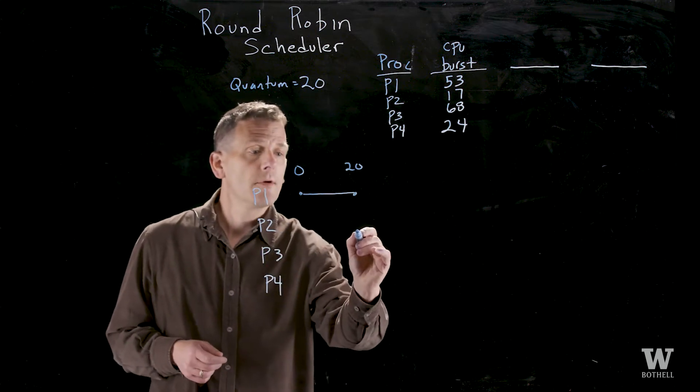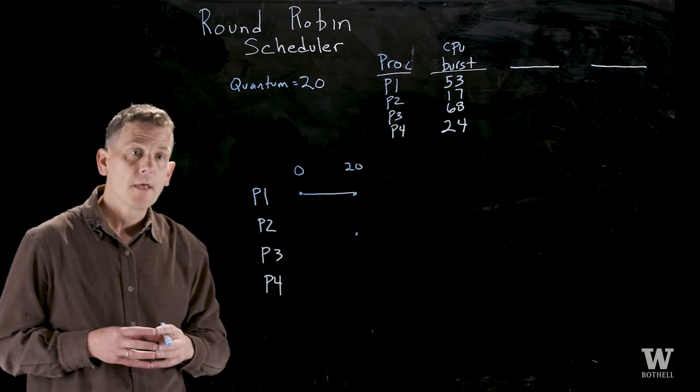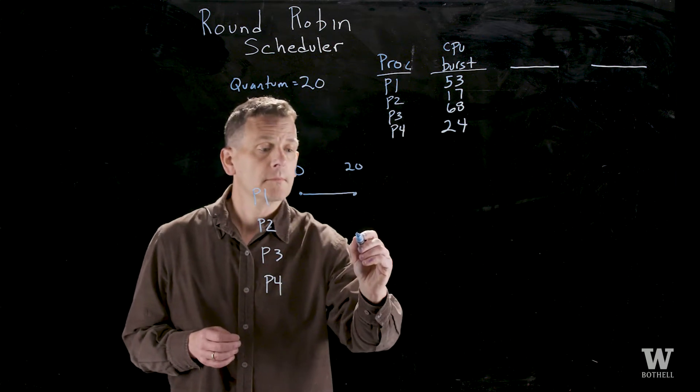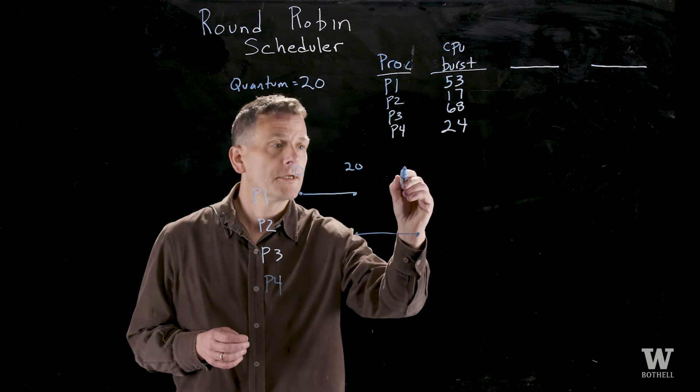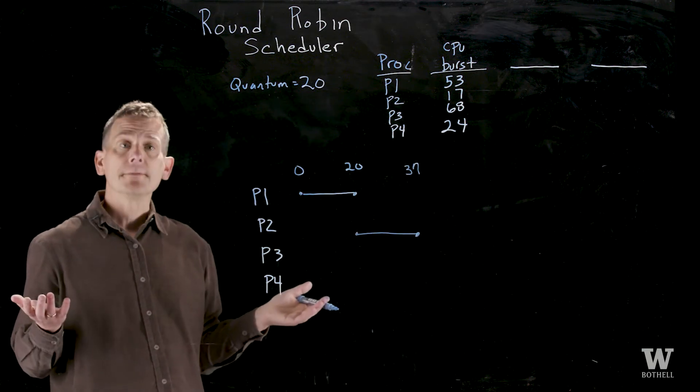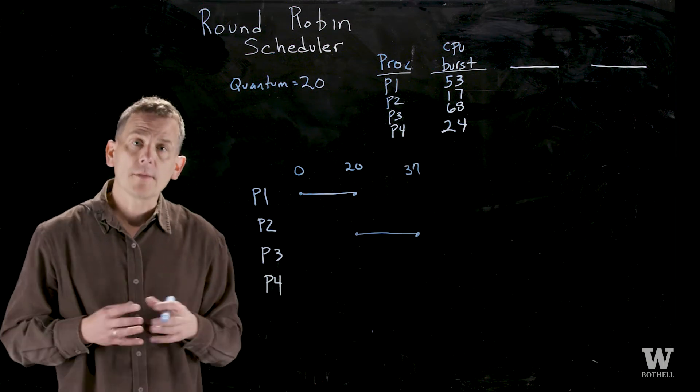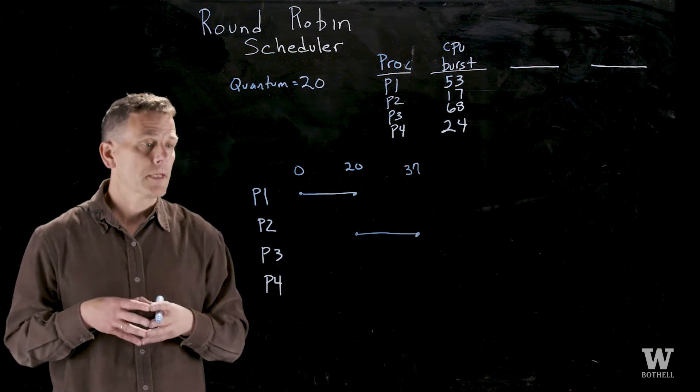Process 2 then runs from 20 all the way through. Well it doesn't need all 20 milliseconds and so it only takes 17. So it will only run until time 37. Now process 2 is complete. It moves to the terminated state. As you recall, it becomes a zombie until the parent cleans up its state.